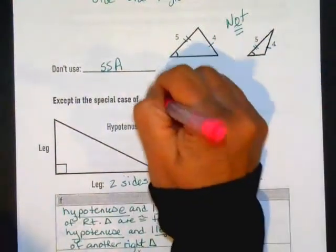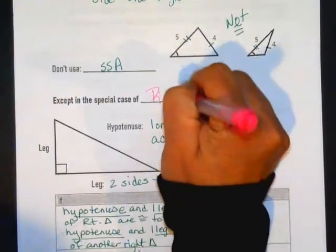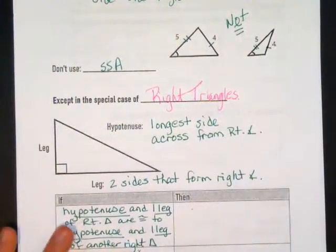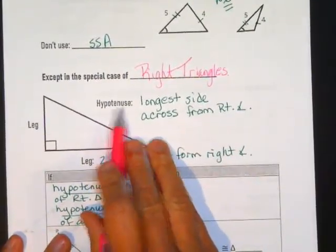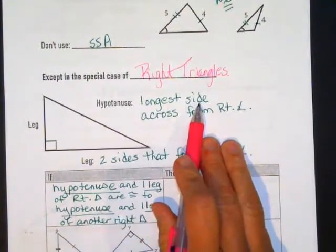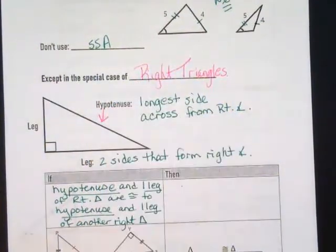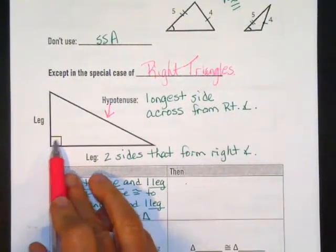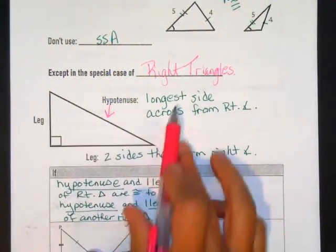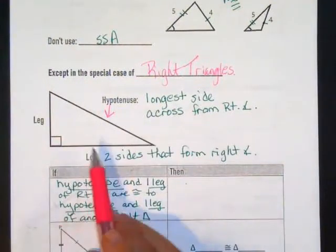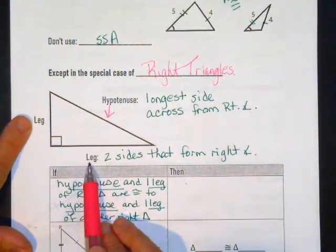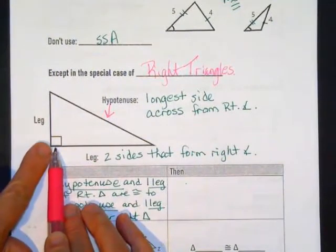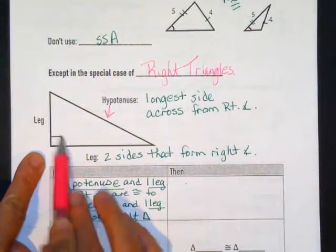Side-side-angle doesn't work to make congruent triangles except in the case of right triangles, and that's the only time it works. In a right triangle, the hypotenuse is the longest side — it's always across from the right angle. The other two sides are referred to as legs, and those are the two sides that form the right angle.